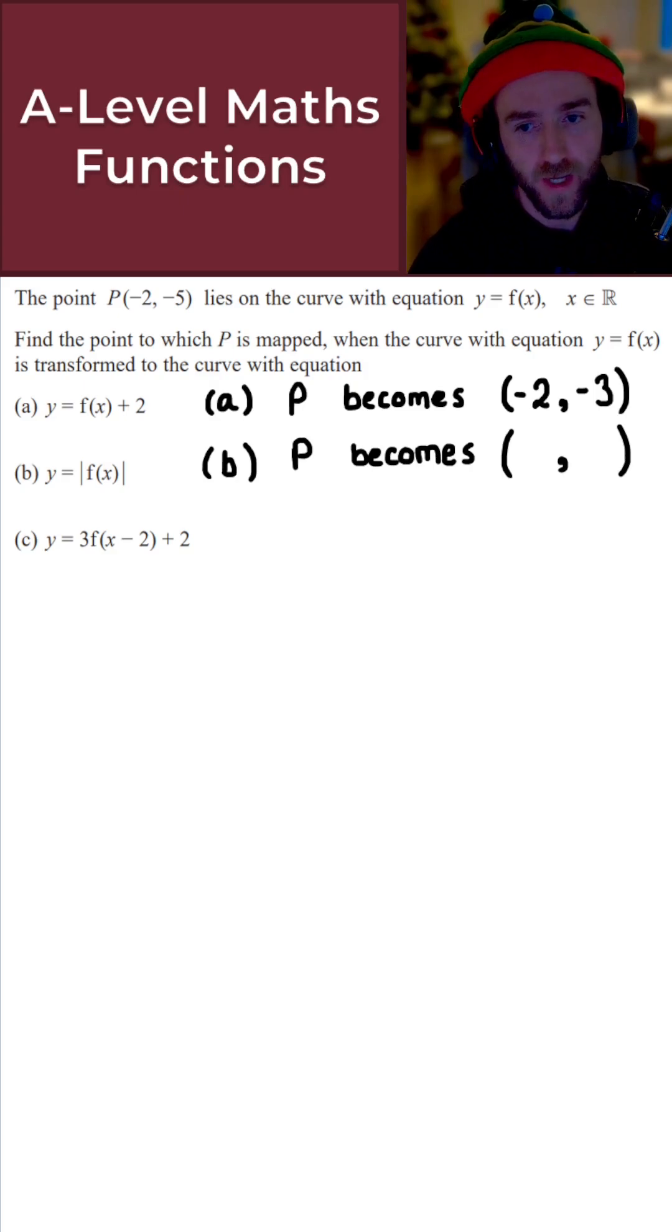For part B we have y equals the modulus of f(x). If we're taking the modulus of the full function, then basically what happens is anything below the x-axis will get reflected above. So if we have a negative y-coordinate, it will now just become positive.